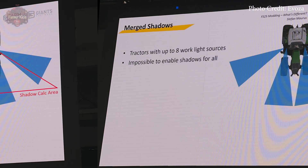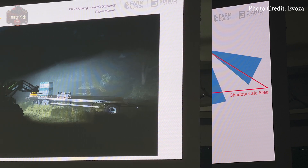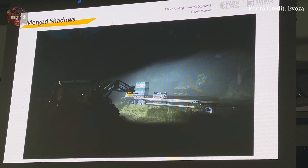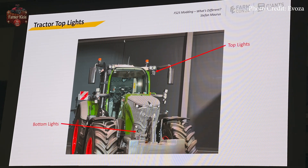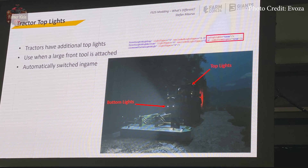Tractors could have up to eight lights in FS22 and it was impossible to enable shadows on all of them. New with Farming Simulator 25, shadow calculations can be merged, but the lights need to be pointed in generally the same direction. Most tractors also have top and bottom front lights, and there is now a way to define auto switching of those lights based on the tool attached to the front and its position — when a large mower is raised, only the top lights are lit, but when the mower is lowered, the bottom lights are lit instead.